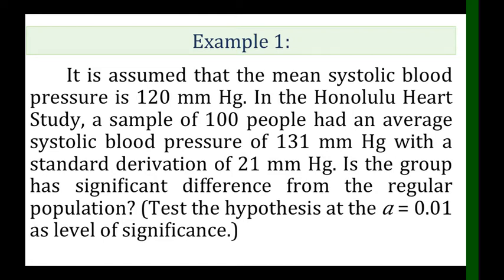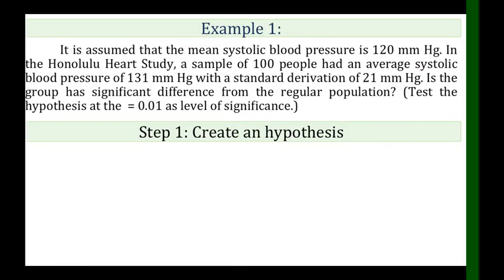Using the stepwise method, we will do five steps. For Step 1, we create the hypothesis. First, determine the statement from the question. The question is: 'Is the group significantly different from the regular population?' Make that question a statement by changing the first word, so the statement becomes: 'The group has a significant difference from the regular population.'